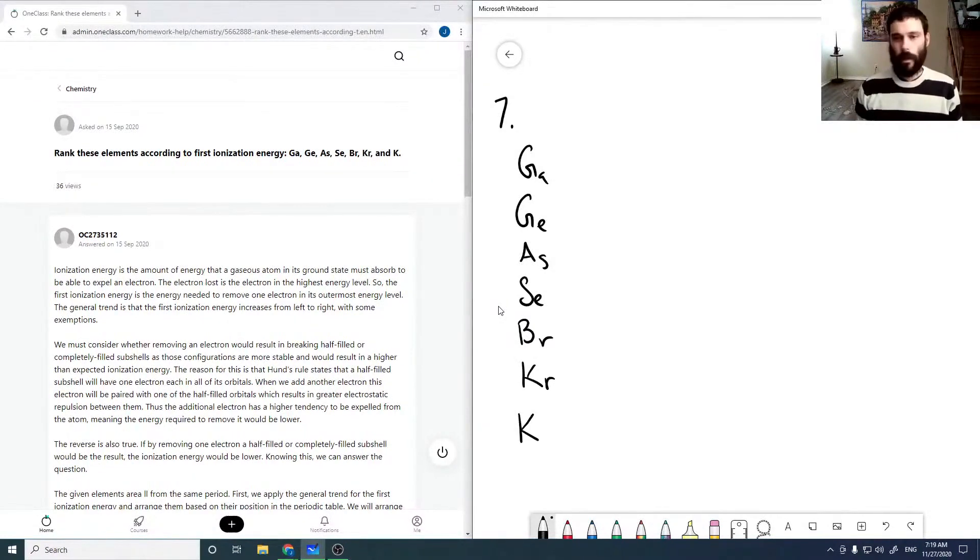So gallium's valence is 4s2, well, I guess not valence, but highest orbital electron configuration. And these just go across the periodic table.